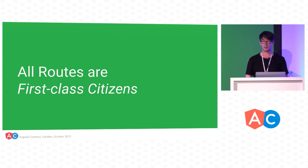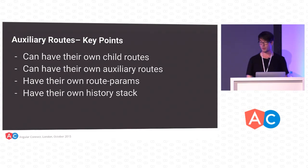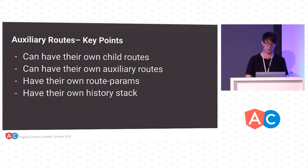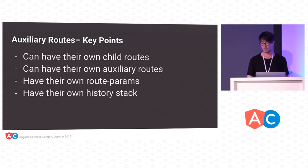All routes in the component router are first-class citizens. For auxiliary routes, this means they can have their own child routes, their own auxiliary routes inside them, their own route params, and even their own history stack. So they're decoupled in a very interesting and powerful way.